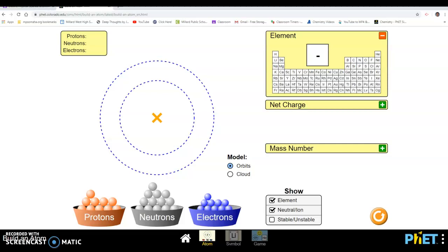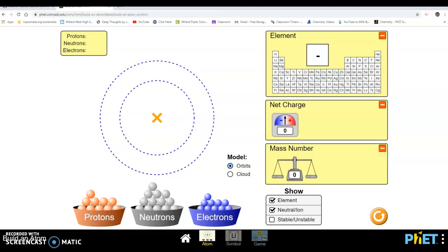A couple of things for the settings. First thing, let's make this bigger, so you'll notice there is a plus button here. Go ahead and activate that. Same thing here under the mass number, you can expand this. Go ahead and do that as well. Also, I want to check this box down in this area, the stable/unstable. So go ahead and highlight that.